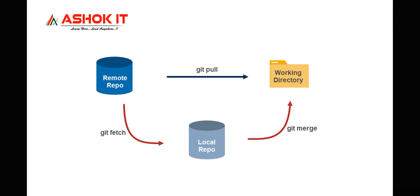If you use the pull command, it is going to download the latest changes directly. Pull means download the changes directly. Fetch means it is for verification purposes — are there any changes available or not? Now let us understand that clearly.